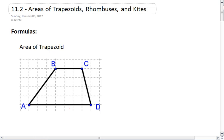Remember, a trapezoid is a figure that has one pair of parallel sides and only one.